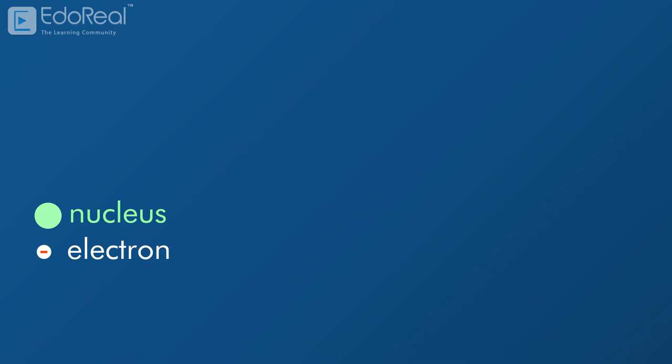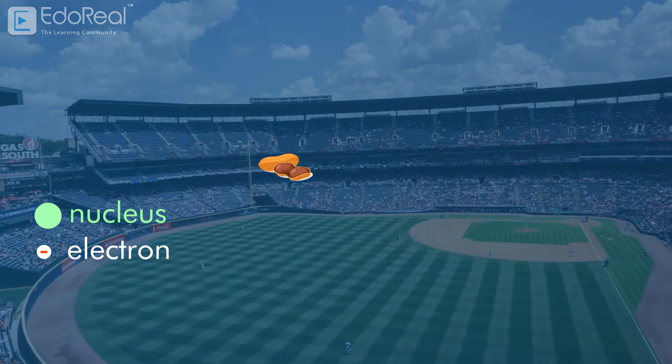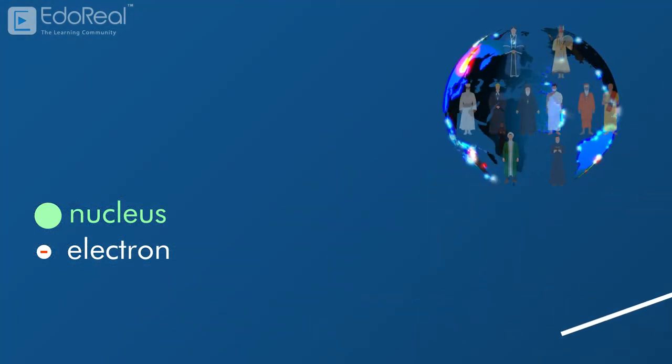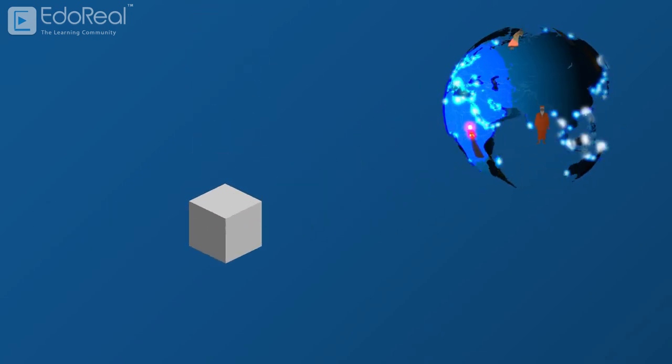If the nucleus were the size of a peanut, the atom would be about the size of a baseball stadium. If we remove all the empty space inside the atom, the entire human race would fit into the volume of a sugar cube.